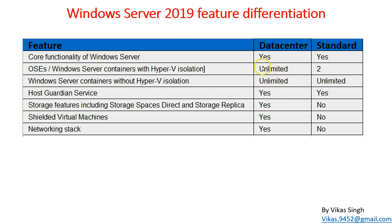For server containers with Hyper-V isolation, Datacenter supports unlimited containers and virtual machines, while Standard supports only two. For Windows Server containers without Hyper-V isolation, both editions support unlimited containers. We're going to cover all of this in the labs and see how it works in practice.